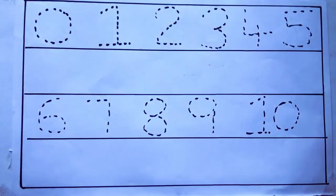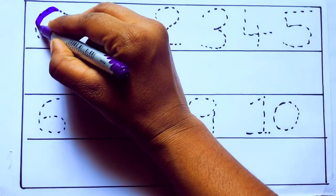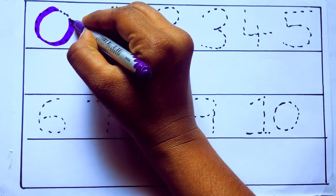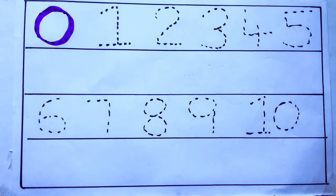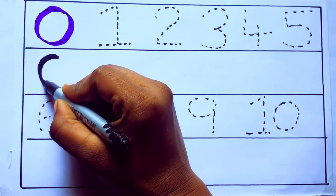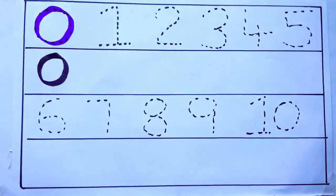Let's draw numbers. Violet color, 0. Z-E-R-O. Violet color, 0.